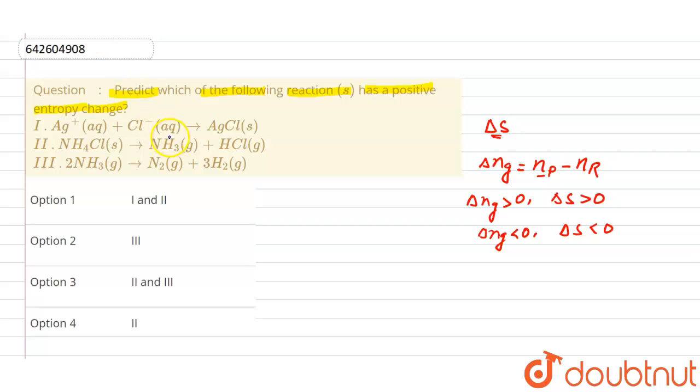If you see the first equation, first reaction basically, that will not be valid for delta ng because here delta ng cannot be defined for this aqua solution. So we can do directly - here we have two ions, one positive and one negative, so degree of randomness will be greater. But here only one compound is there that is in solid form, so obviously degree of randomness will be less.